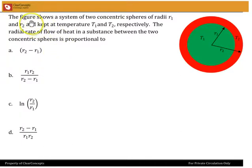Okay, so here's the problem. The figure shows a system of two concentric spheres of radii R1 and R2, kept at temperatures T1 and T2 respectively. The radial rate of flow of heat in a substance between the two concentric spheres is proportional to, and we've got some options here.